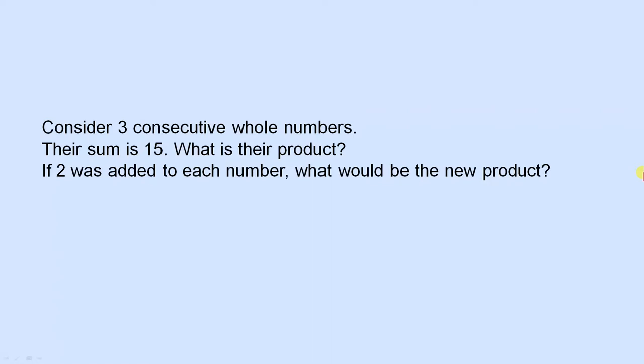Consider three consecutive whole numbers. Their sum is 15. What is their product? If two was added to each number, what would be the new product?